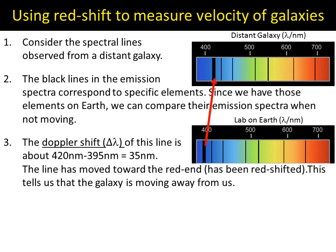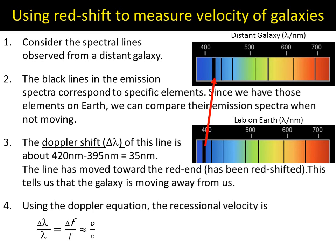How do we use that to find the recessional velocity? We use the Doppler equation. The almost-equal-to sign for V over C is because of the effects of very high-speed movement where mass starts to become transferred into energy and energy into mass. At normal velocities, we can assume that's equal.